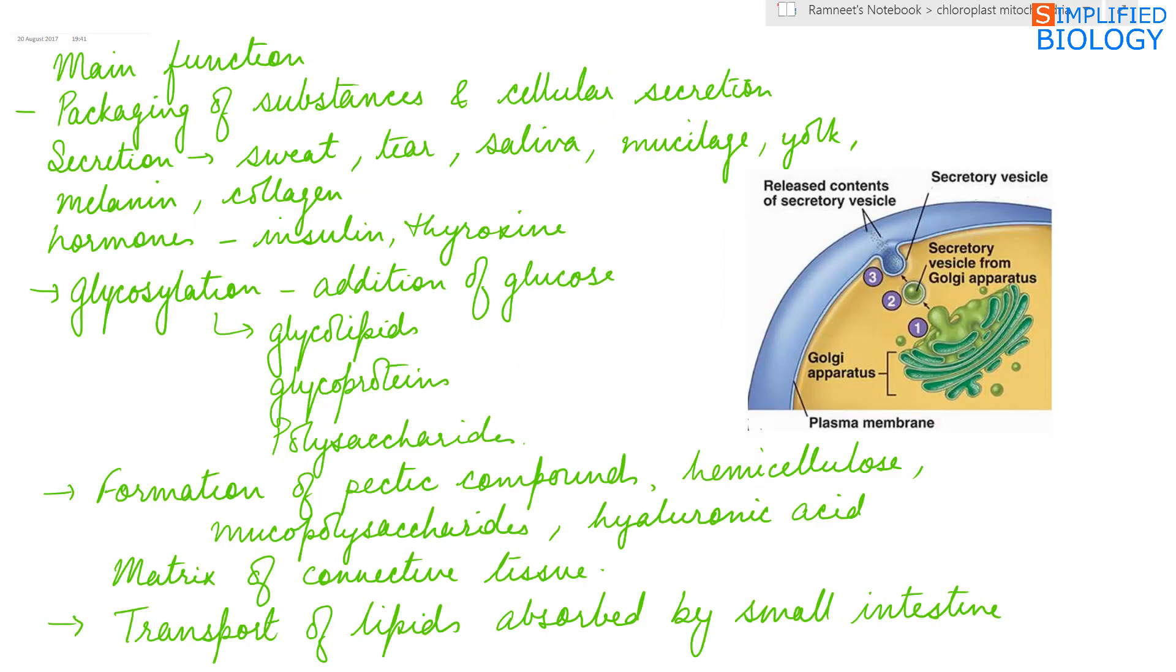The main function of Golgi complex is packaging of substances and cellular secretion. The secretions of Golgi complex are like sweat, tear, saliva, mucilage, yolk, pigments like melanin, collagen, hormones like insulin and thyroxin.